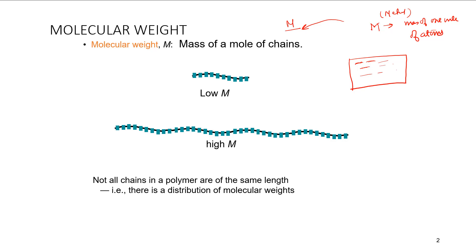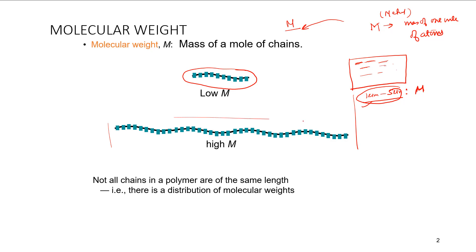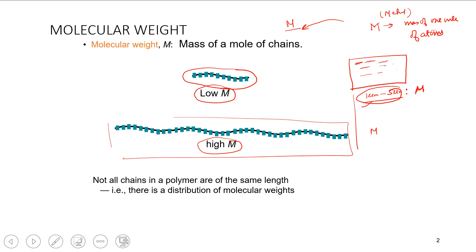To handle different chain lengths, we can divide the size range into intervals. For example, chains in the range 1 micrometer to 5 micrometers will have a mass M, and chains of higher length will have a higher M. This is why the concepts of number average molecular mass and weight average molecular mass are introduced.